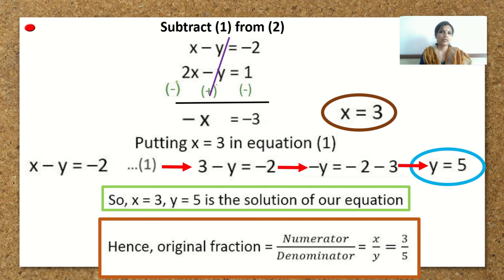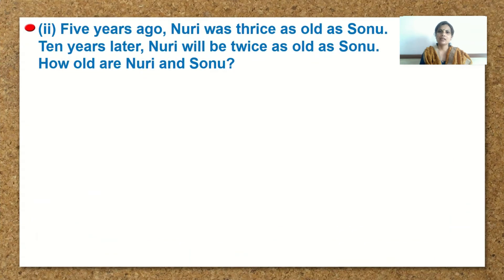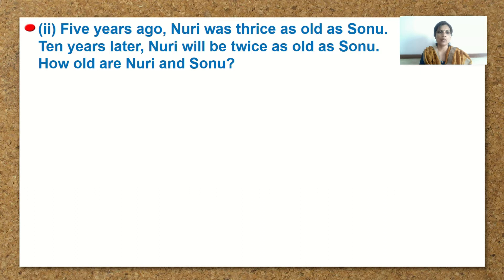I am sure, children, you are all solving along with me. Please do it — it will be good practice for all of you. Moving to the next sum, question number 2: in such cases, always consider the present age of whoever is given in the sum as x and y.